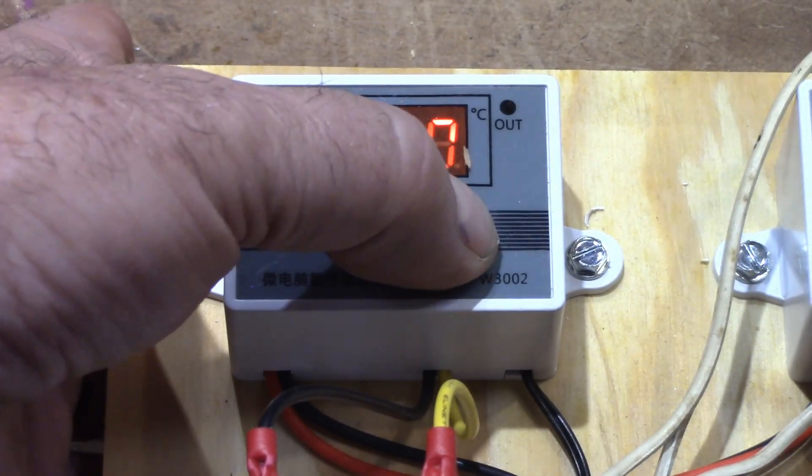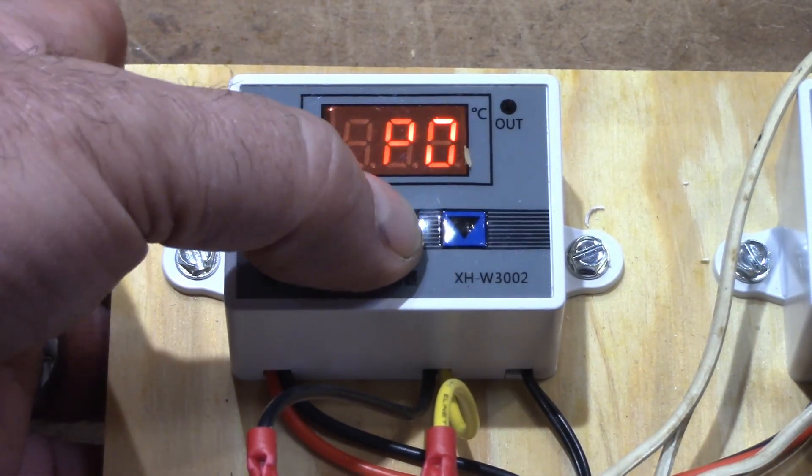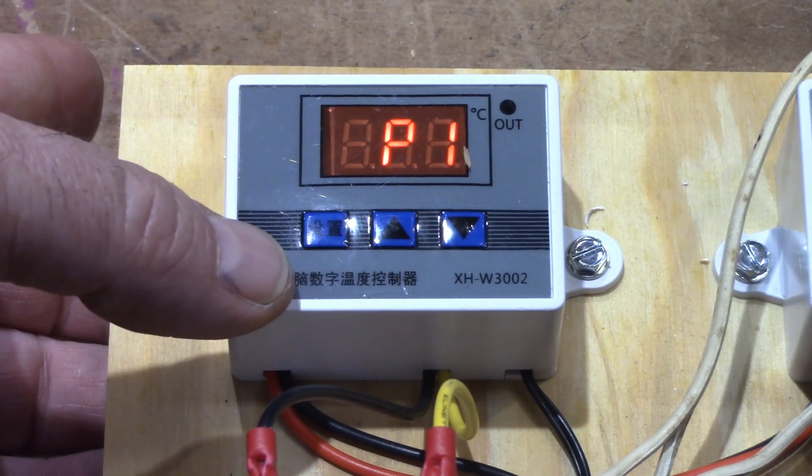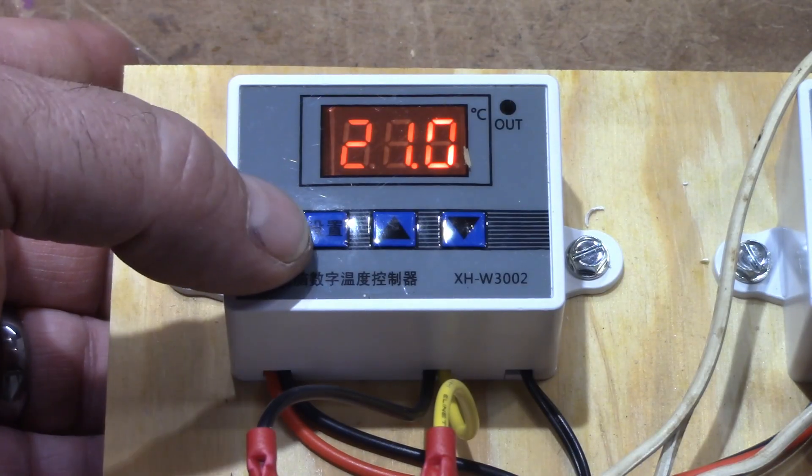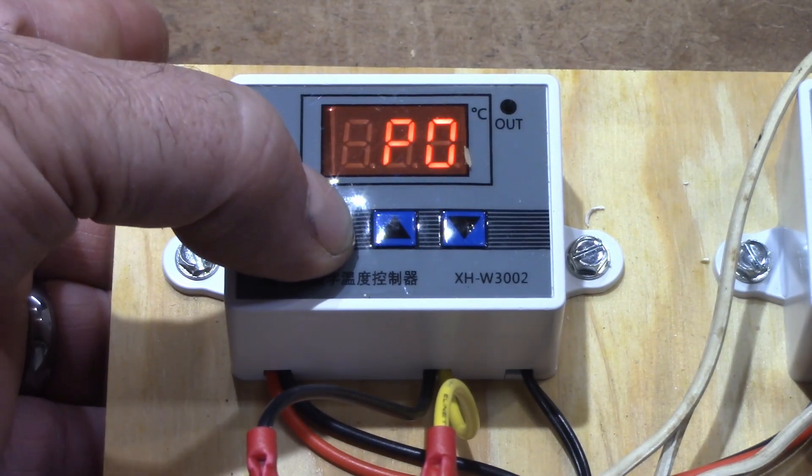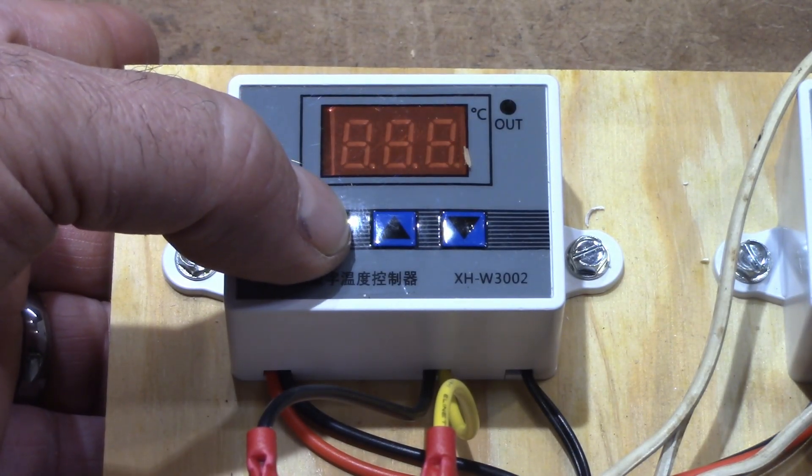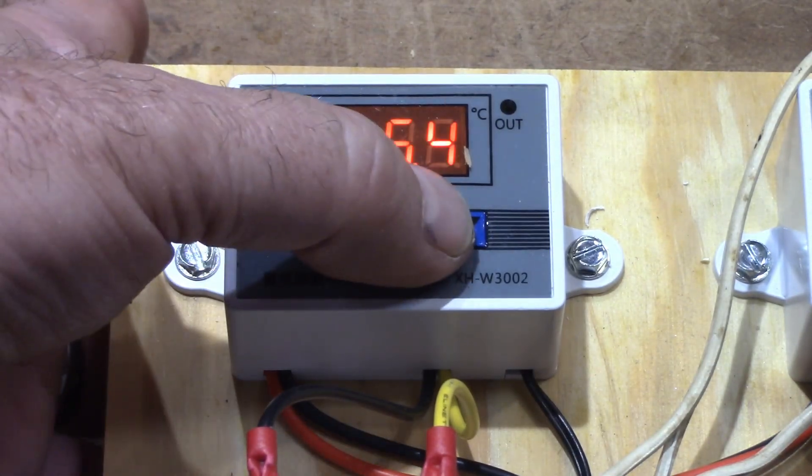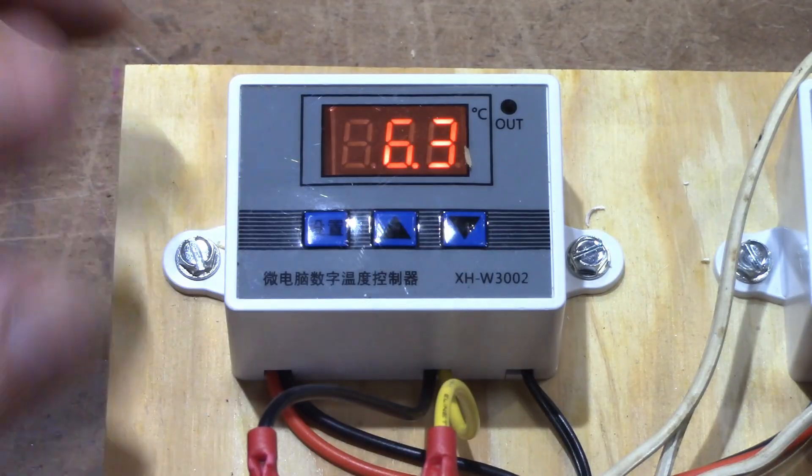And then I'm going to go back to this, and I want to set the temperature that I want it to turn off. So I go to P1 and I'm going to set that to 3. So I've got it coming on at 1 and now I want it to go off at 3.